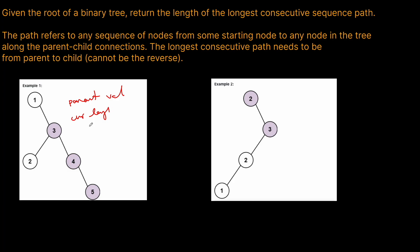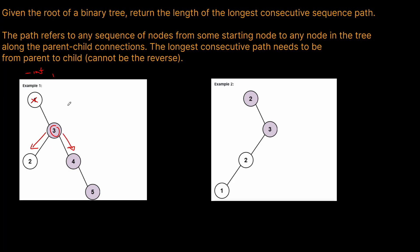For example, when we start at the root, there is no previous value, so we set it to minus infinity and the chain length to 1. Then we call DFS on node 3. The difference between 1 and 3 is 2, not 1, so that's not a chain. From 3, we DFS into its left and right children, with chain length 1 and parent value 3.